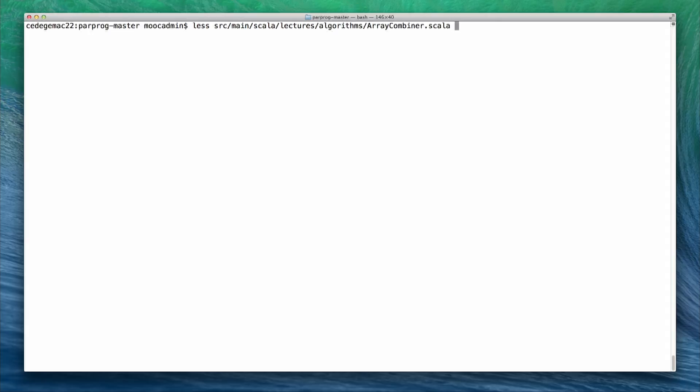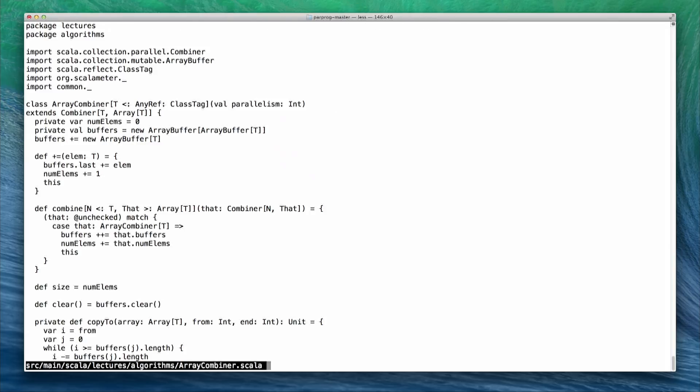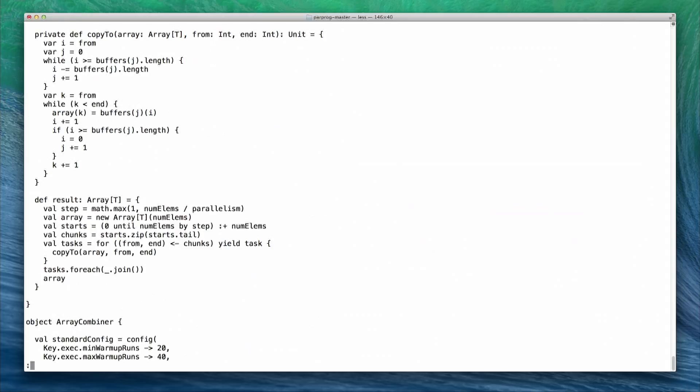Before we run the benchmark, we will take a look at the contents of our source file. Here we can see the implementation of the array combiner class. Due to type variants in the combiner class, the combine method has a slightly different signature from what we saw in the lecture. However, its semantics and implementation remain the same. We can also see the implementation of the copyTo method, used to copy the respective subintervals of the array.